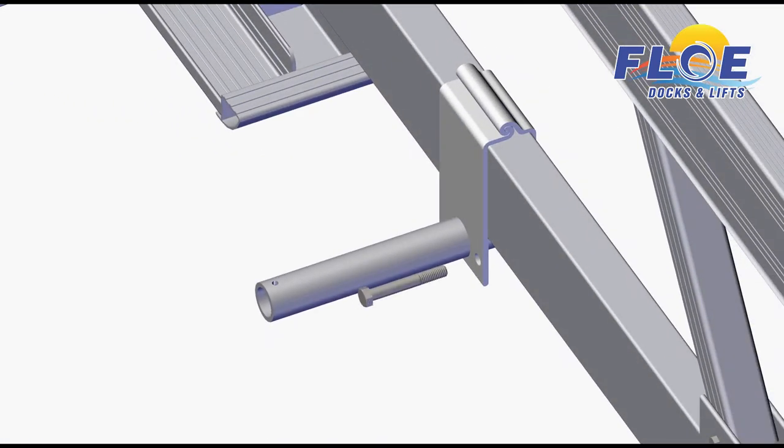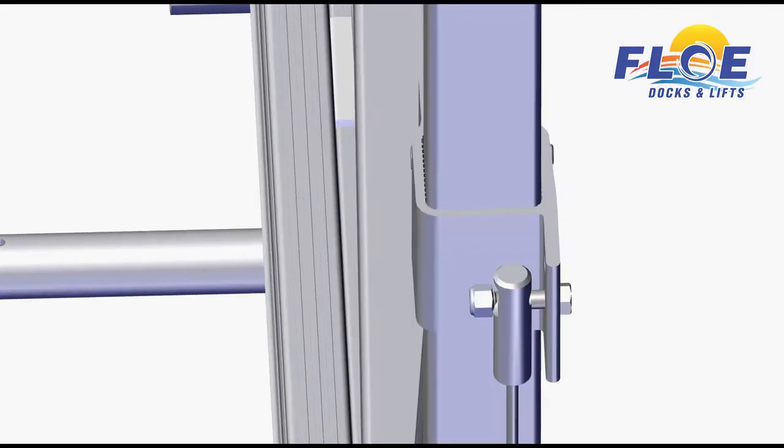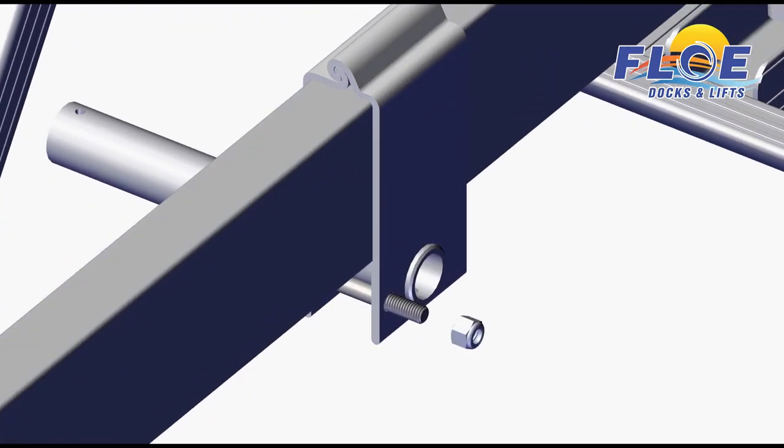Insert the half inch bolt into the clamp assembly and secure it with the supplied nylock nut. Tighten and torque to 5 foot-pounds.